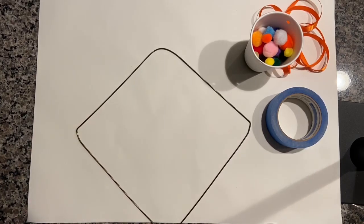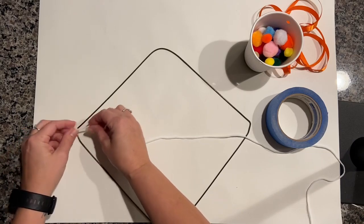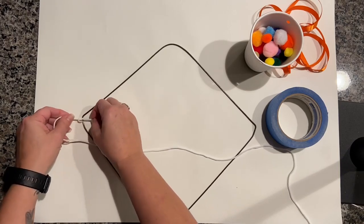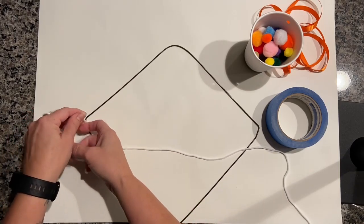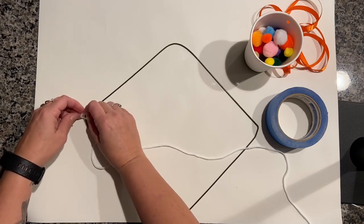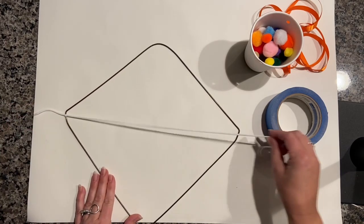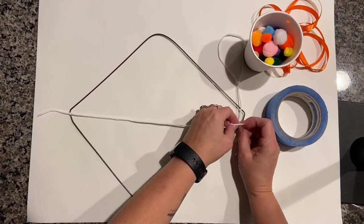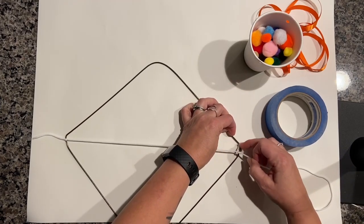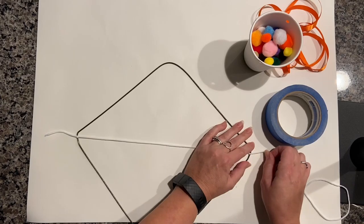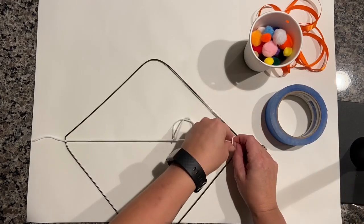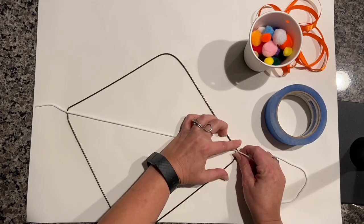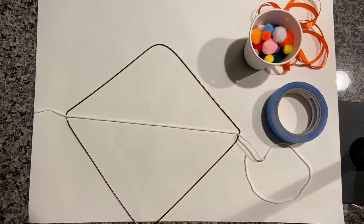Now we're going to take our elastic cord and tie it across the opening that we have bent the hanger into. We're going to double knot it for extra security. Tie the other end across on the other side of the hanger, double knotting again. Really pull because this is elastic cord so it's going to stretch a little bit. And once we have that double knotted, we're going to cut any extra elastic.